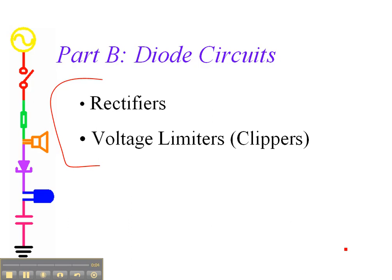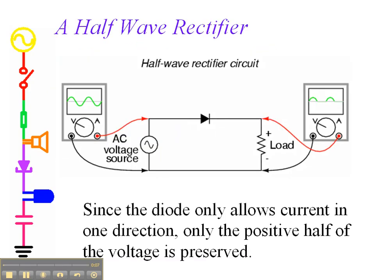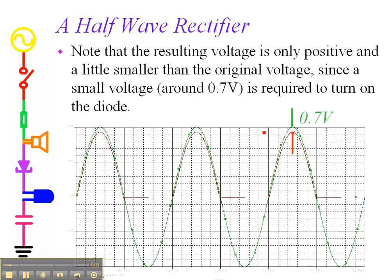Now we're going to see what we actually do with diodes in circuits. The first circuit we want to look at is called a half-wave rectifier, where we have a diode and a resistor. Since the diode only allows current in one direction, only the positive half of the voltage will show up. Here's the positive voltage — we get nothing when the oscillating voltage goes the other way, so basically what comes out is a lumpy-looking function. There's a little bit of voltage required to turn the diode on.